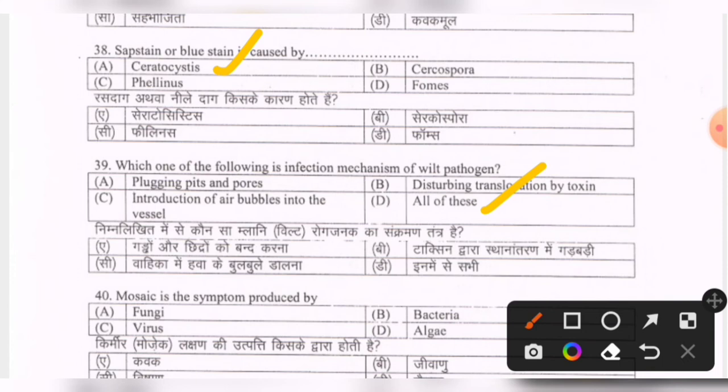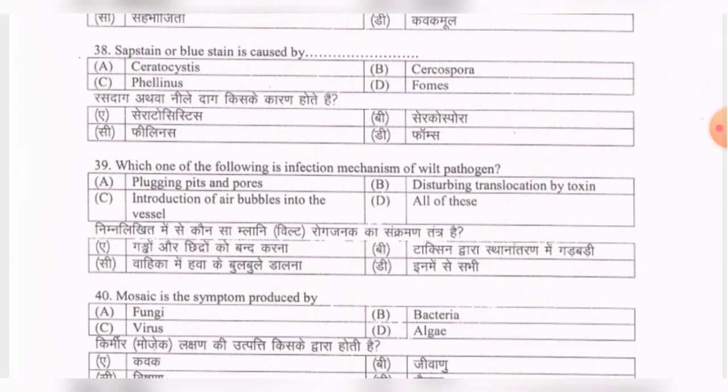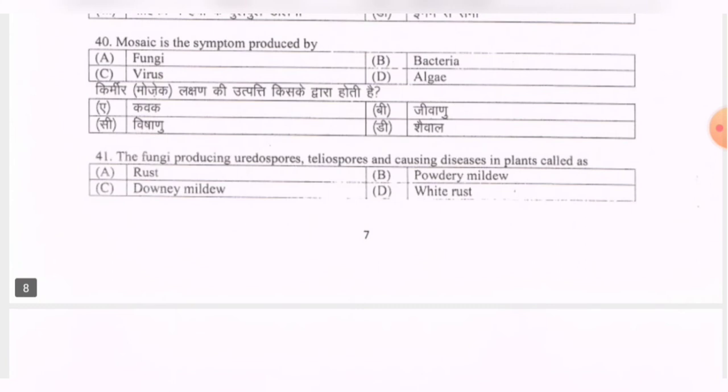Next question: mosaic is a symptom produced by — options are fungi, bacteria, virus. The correct option is C — virus.